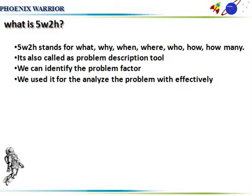5W stands for: What, When, Where, Why, and Who. 2H stands for: How and How Many. This is a problem description tool used for problem identification. We can identify and address problems and their factors. The main purpose of 5W2H analysis is to analyze and clearly describe the problem.